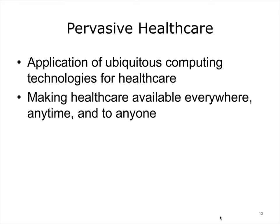So far, we have discussed some basic concepts related to ubiquitous computing. In the second half of this lecture, we will specifically look at applications of ubiquitous computing in healthcare. The term pervasive healthcare has two related but distinct meanings. On one hand, it is used to refer to the application of ubiquitous computing technologies for the healthcare domain. On the other hand, and somewhat more generally, it is used to refer to a way of healthcare delivery that makes it available everywhere, anytime, and to anyone. It is the hope of many researchers that introducing ubiquitous computing technologies can help achieve the vision of universally accessible healthcare.